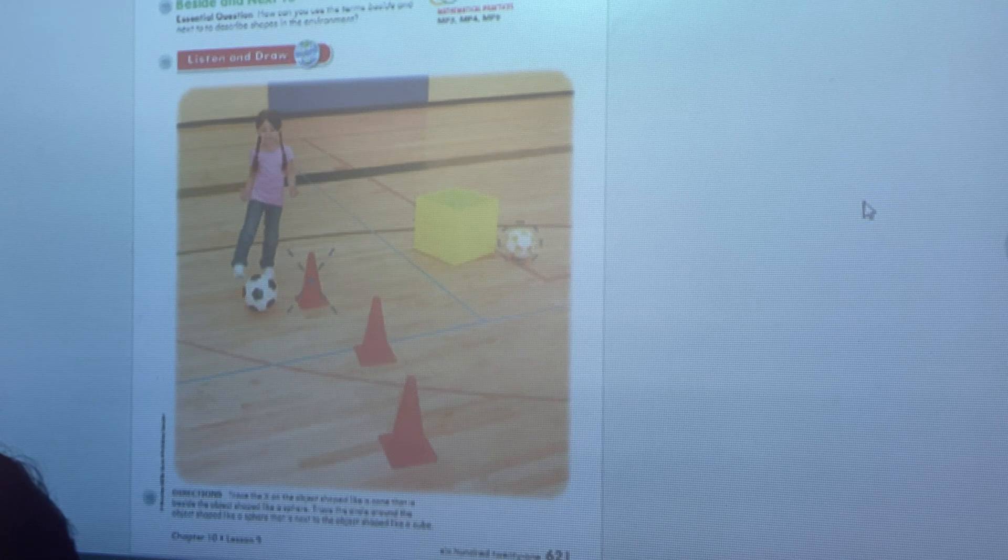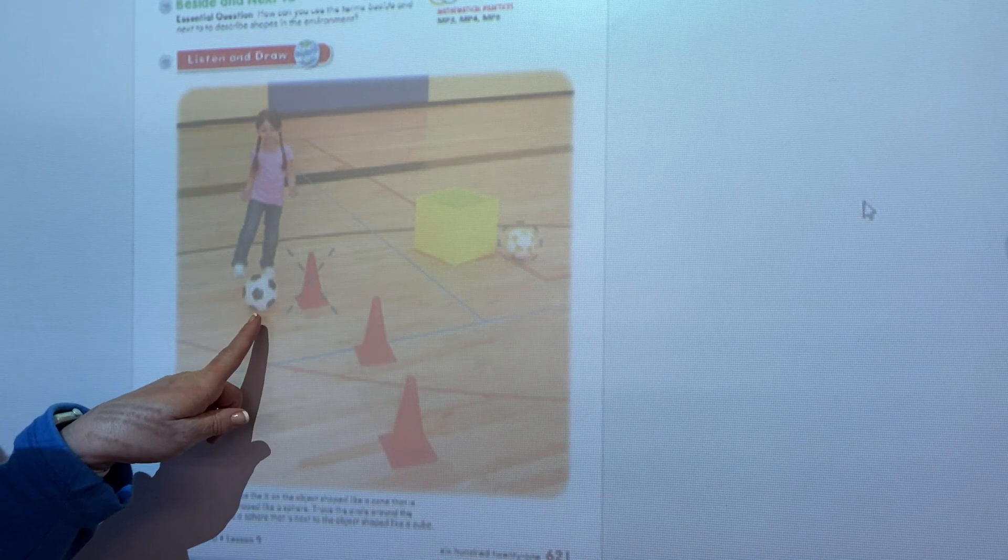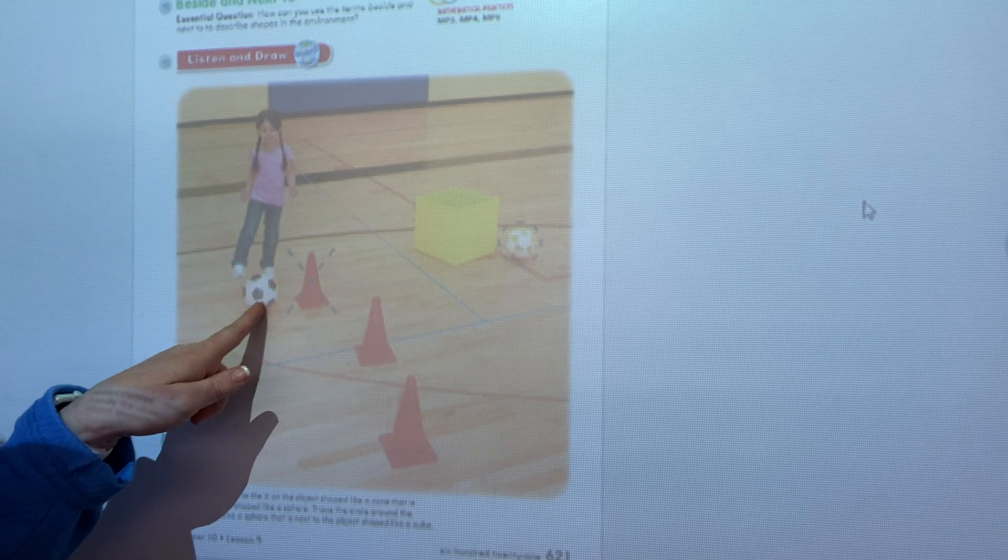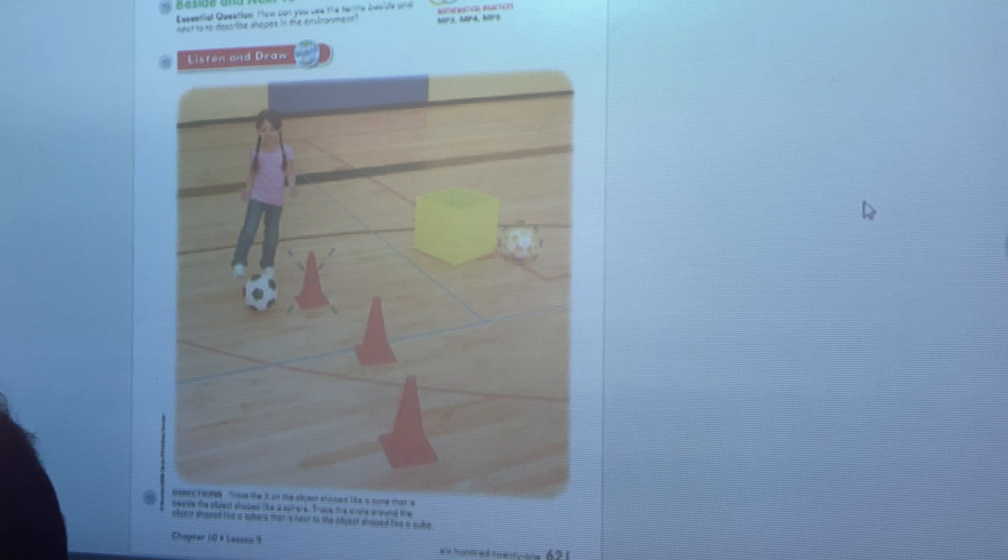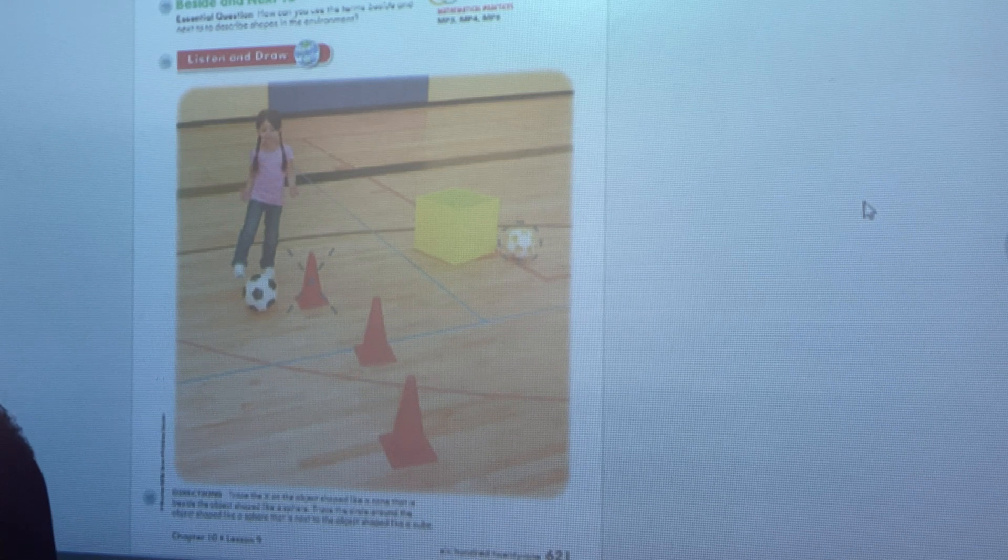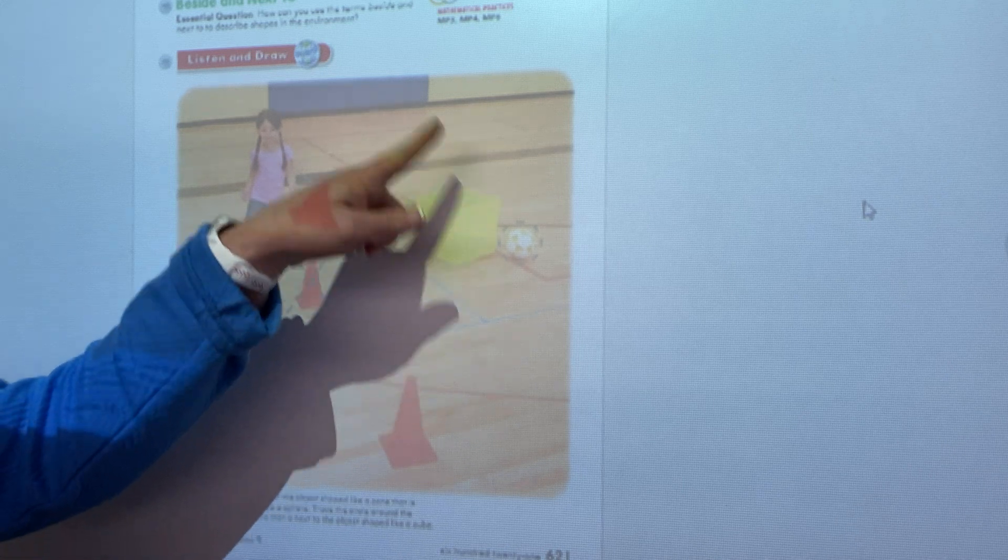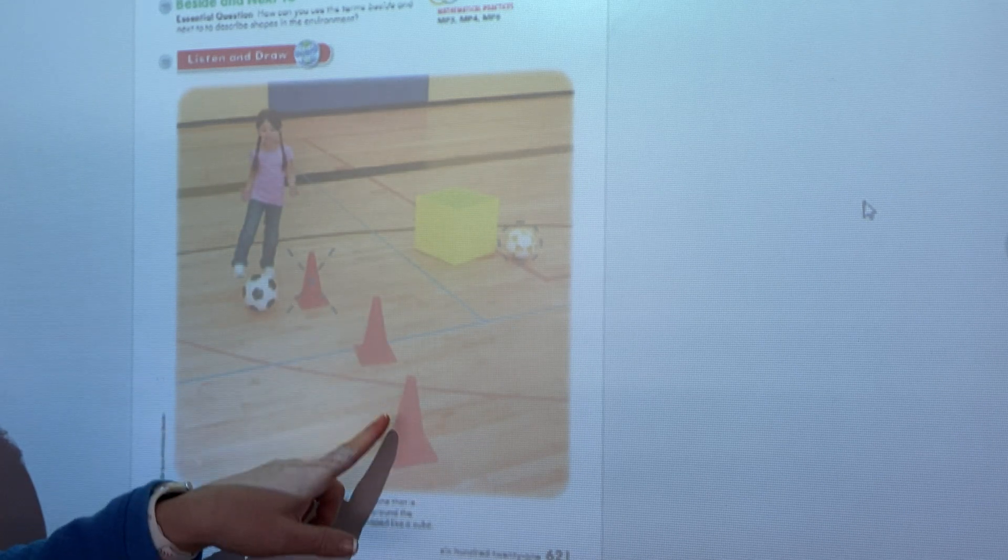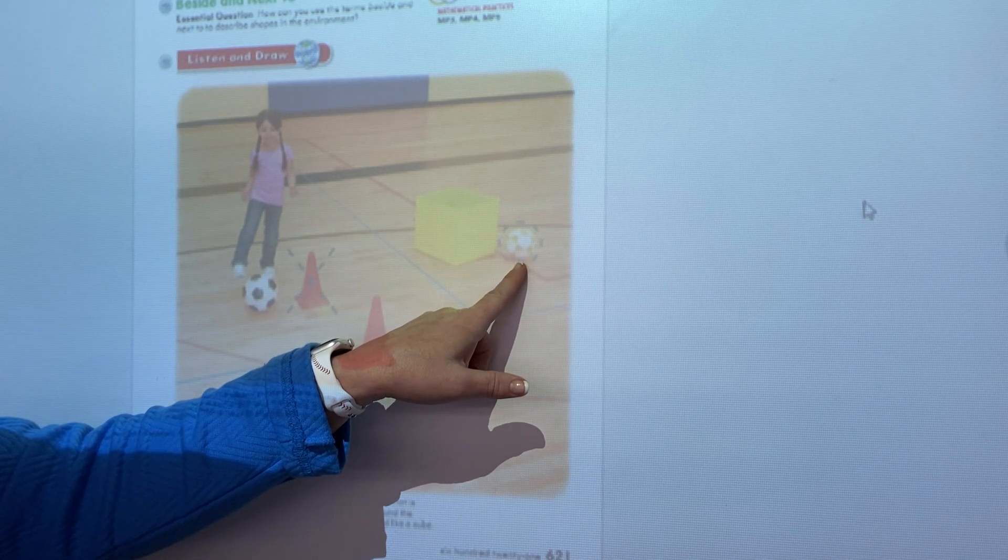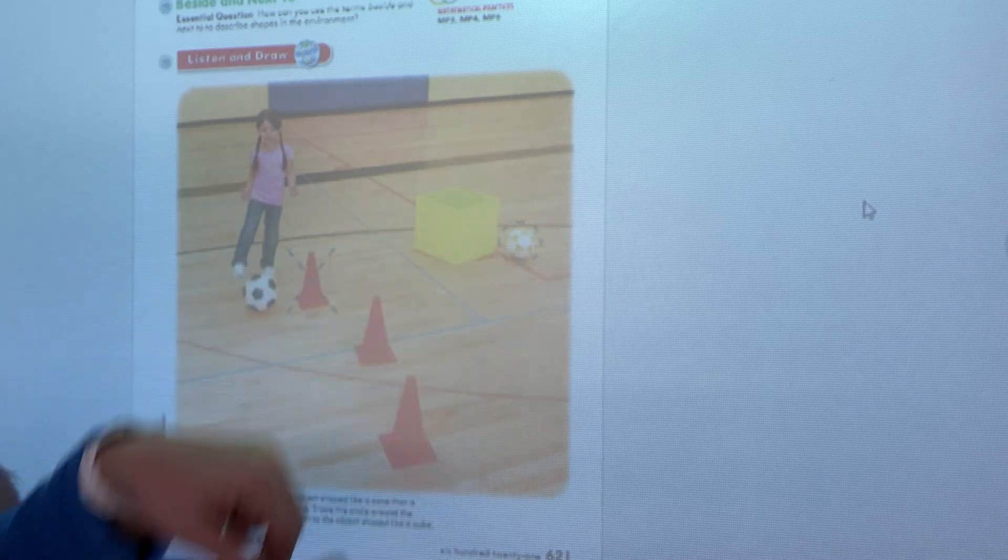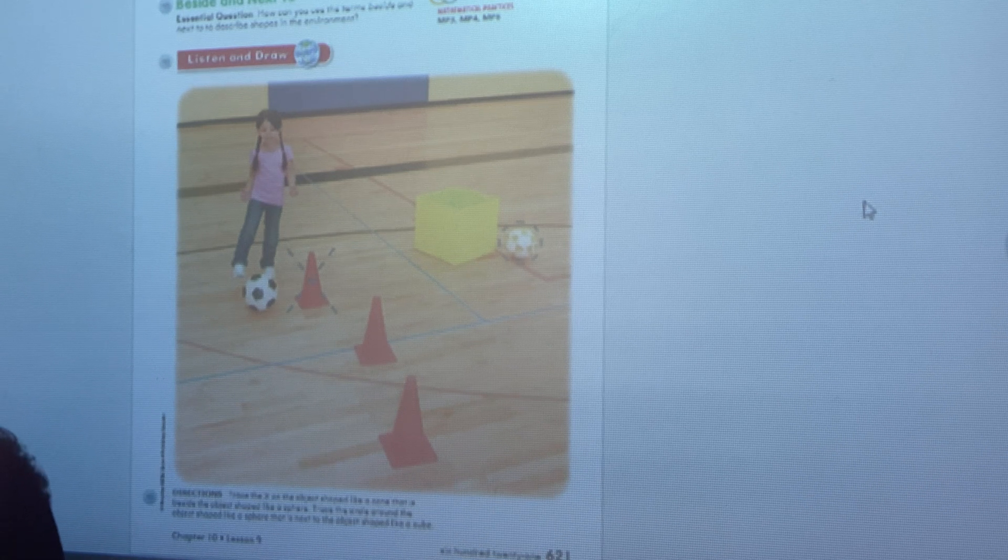Let's take a look at our Math Workbook page 621 and see what this girl is doing. Do you know what that is? She looks like she is kicking a soccer ball. A soccer ball would be the same as what three-dimensional or solid shape? If you said sphere, you are correct.